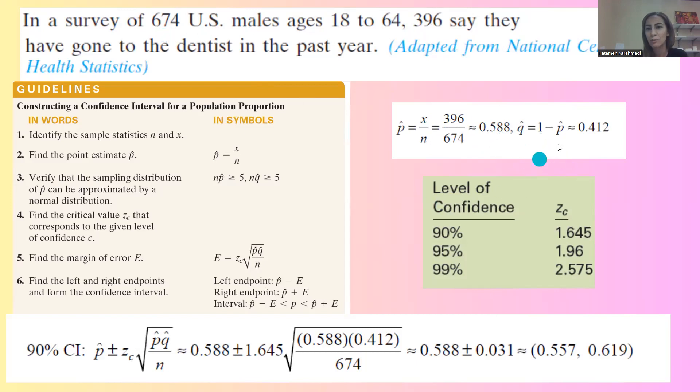Q hat is 1 minus p hat, which is approximately 0.412 or 41.20% said no.